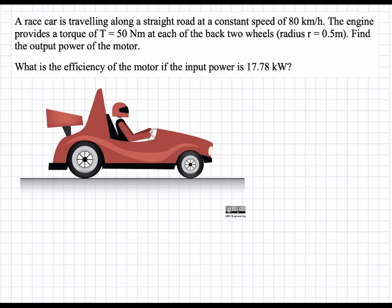In this problem we have a race car traveling along a straight road with a constant speed of 80 kilometers per hour. The engine provides a torque of 50 newton meters at each of the back two wheels, which have a radius of 0.5 meters. We are asked to find the output power of the motor, and then with this output power, what is the efficiency of the motor if the input power is 17.78 kilowatts.